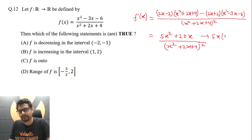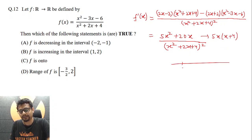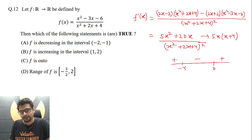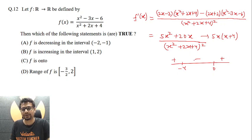Looking at the numerator, if you take 5x common it becomes 5x times (x plus 4). So by the wavy curve method, f prime of x is positive for x greater than 0 and for x less than minus 4, and it is negative between minus 4 and 0. So f(x) is increasing for x greater than 0, decreasing between minus 4 and 0, and increasing for x less than minus 4.